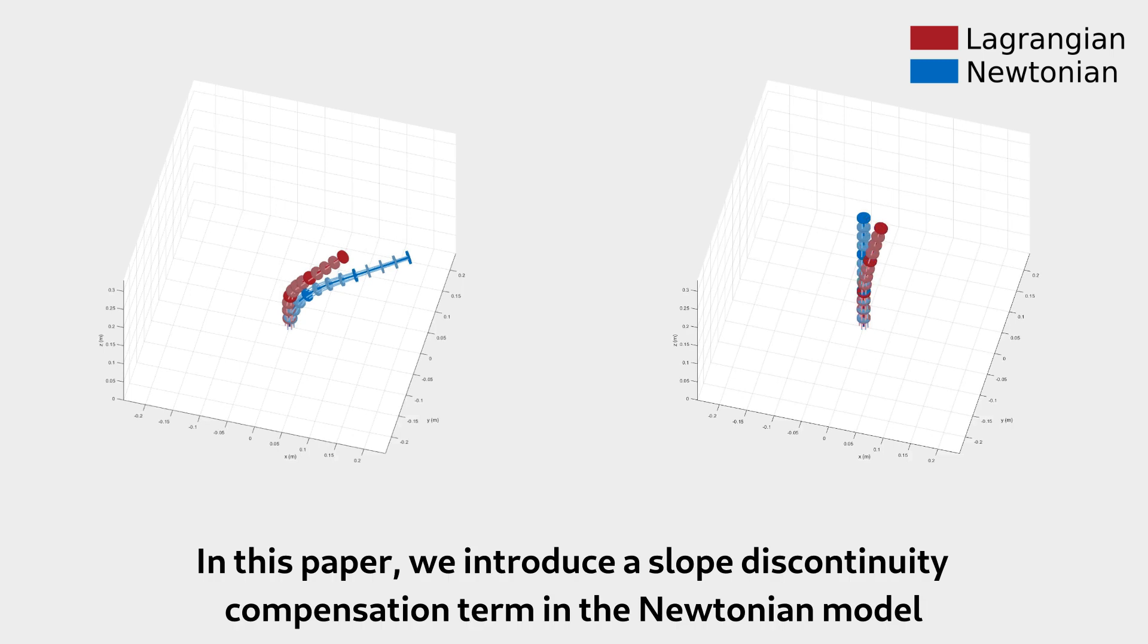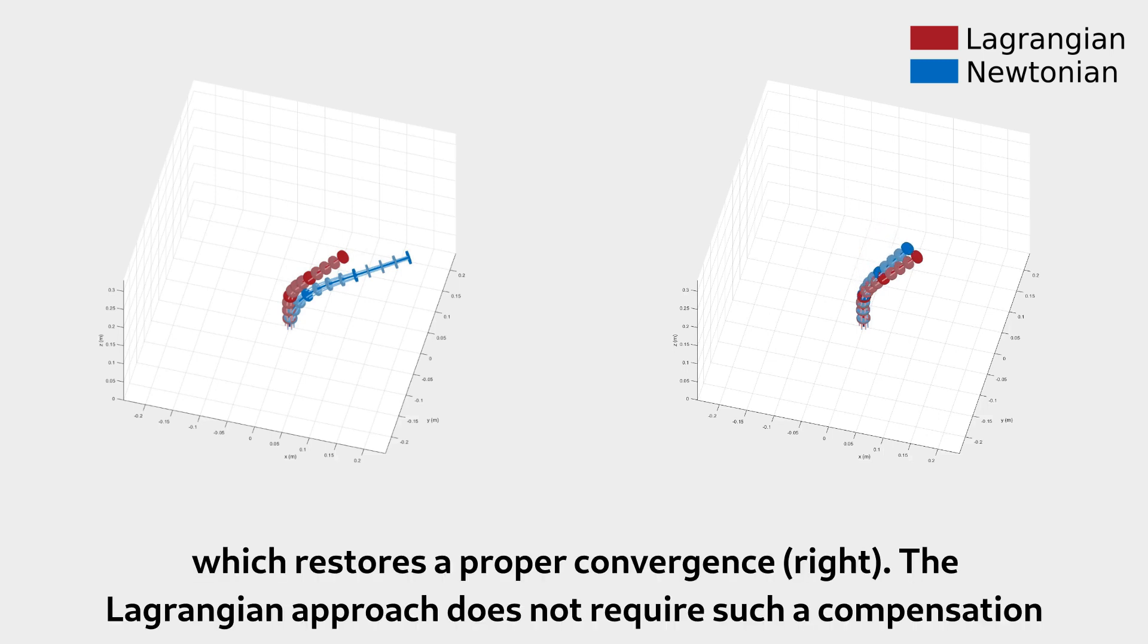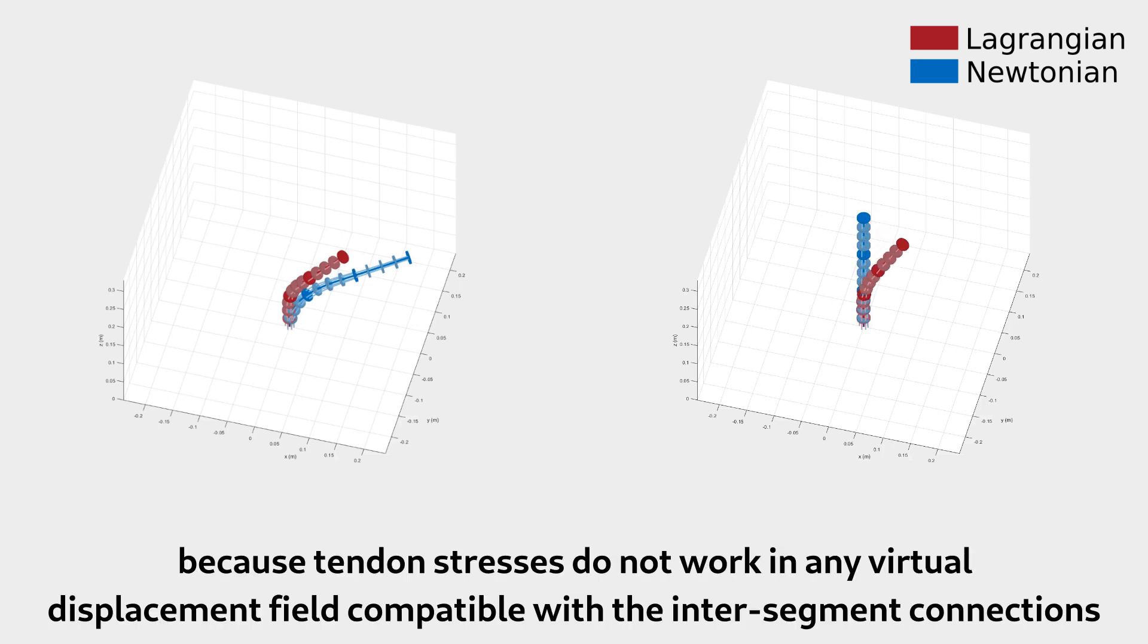In this paper, we introduce a slope discontinuity compensation term in the Newtonian model, which restores a proper convergence. The Lagrangian approach does not require such a compensation, because tendon stresses do not work in any virtual displacement field compatible with the intersegment connections.